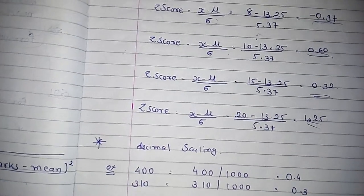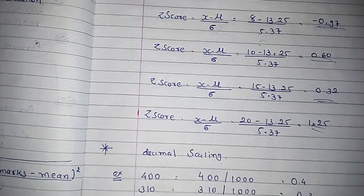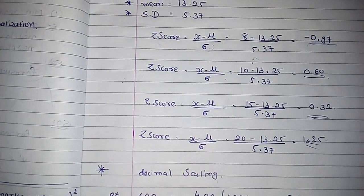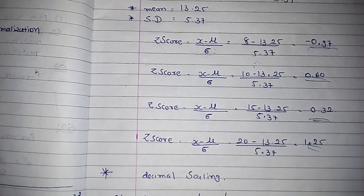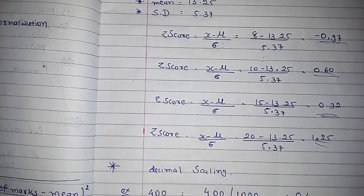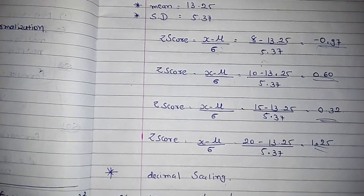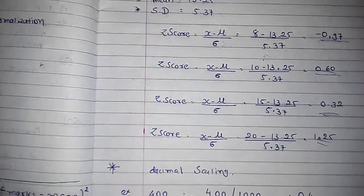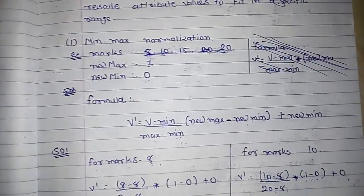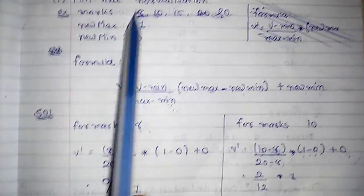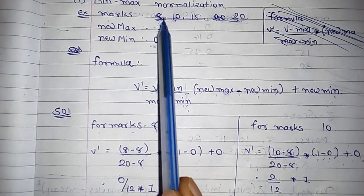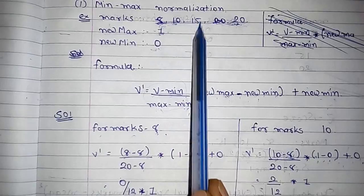What is decimal scaling? Decimal scaling is a data normalization technique. In this technique we move the decimal point of the value of an attribute. This movement of the decimal point totally depends on the maximum value among all the values in the attribute.